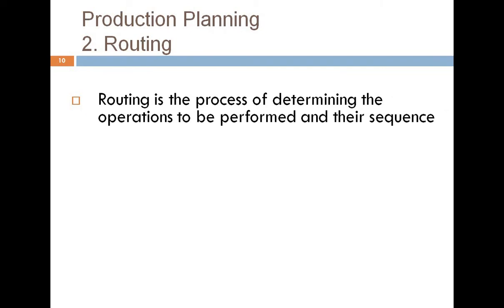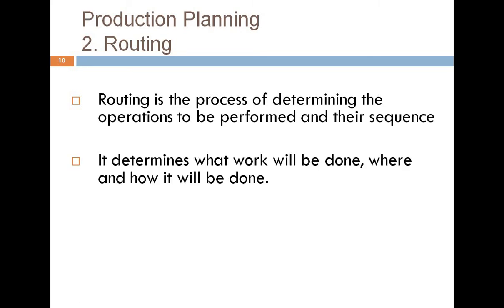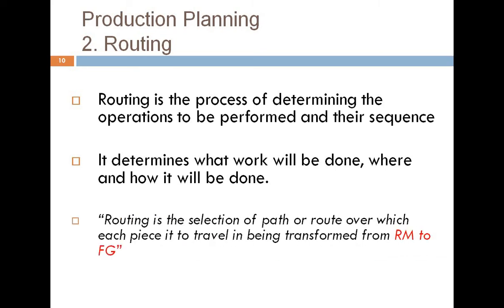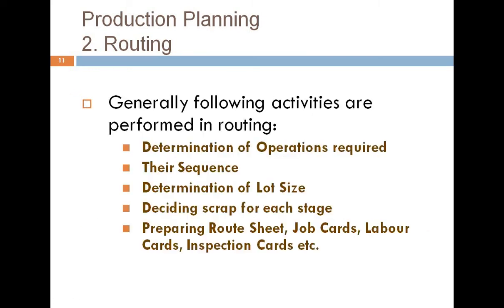Routing is the process of determining the operations to be performed and their sequence. It determines what work will be done, where, and how — deciding which operations are required, whether assembly line or intermittent production system, and how they will be carried out. Routing is the selection of the path or route over which every piece of material will travel in being transformed from raw material to finished goods — determining the sequence of operations that raw material must follow. Activities performed in routing include determination of operations required, their sequence, lot size, and preparing route sheets, job cards, labor cards, and inspection cards.